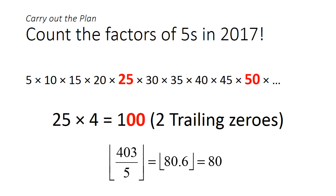So if we divide 403 by 5 and round that down, that tells us there are 80 multiples of 25 which contribute an extra 0. But are we done?